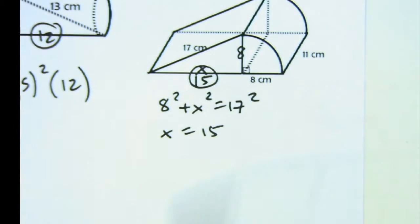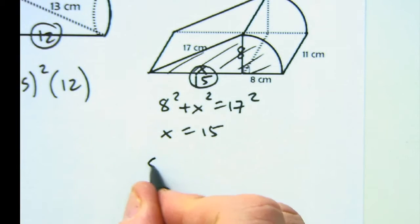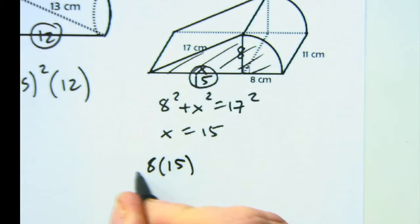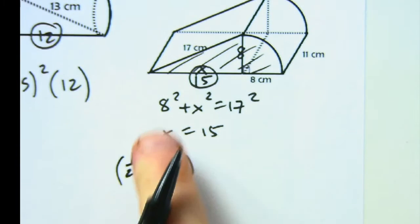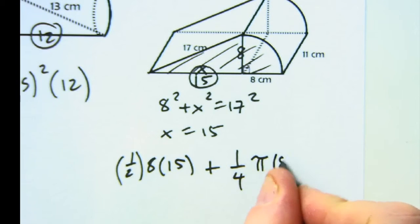I'm going to do it as two pieces added together for one base. So that's 8 times 15 divided by 2 because that's a triangle. And then I'm going to add it to a fourth of a circle, pi r squared.